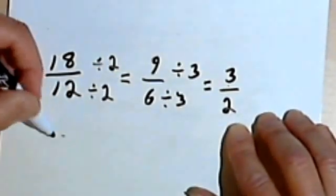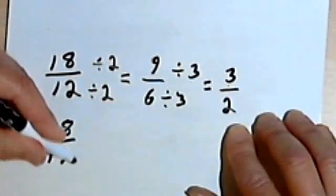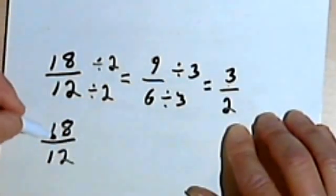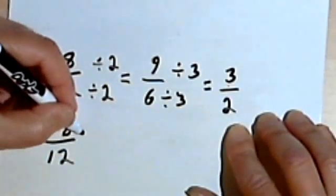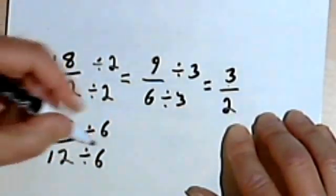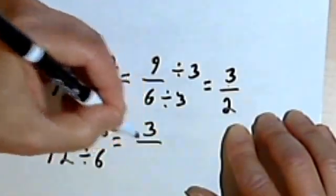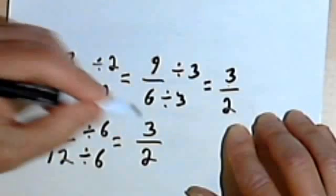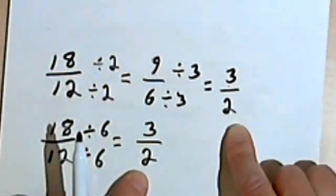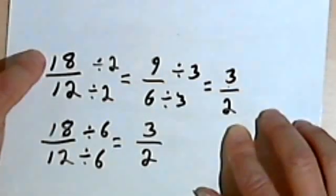Now, I could have, if I'd recognized that 18 and 12 could both be divided by 6, done this all in one step. So divide 18 by 6 and get a 3, and divide 12 by 6 and get a 2. Either way I get 3 halves. This way is faster if you can do it in one step, but the other way will still get you there.